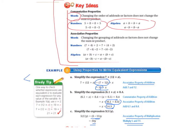Now let's take a look at the study tip box. It tells us one way to check whether expressions are equivalent is to evaluate each expression for any value of the variable. So in Example 1a, we could put 2 in for x and see if it works with the original expression and also with our result. If we put 2 into the original expression we get 21, and if we put 2 into 19 plus x we also get 21 — so that works. A way to check your work is to use a number instead of a variable and see if you get the same answer.